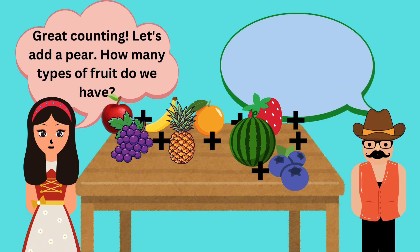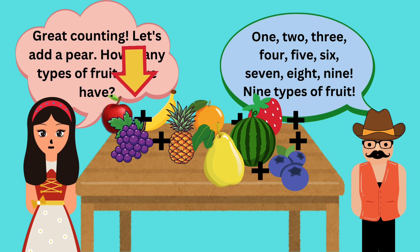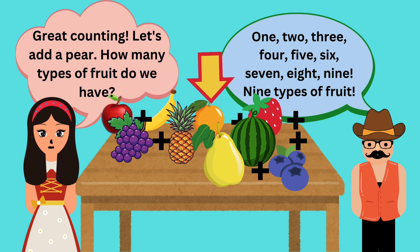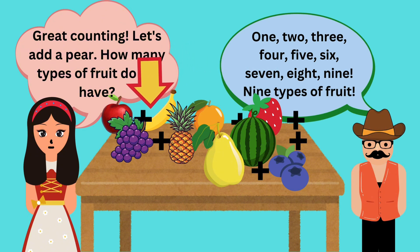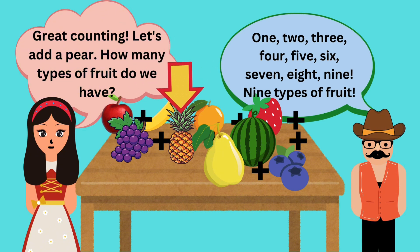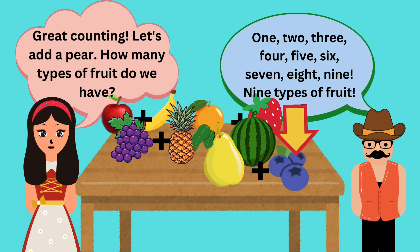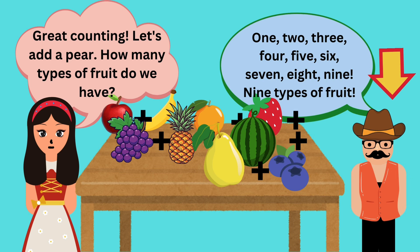Great counting. Let's add a pear. How many types of fruit do we have? One, two, three, four, five, six, seven, eight, nine. Nine types of fruit.